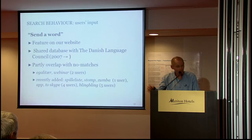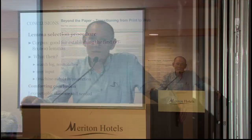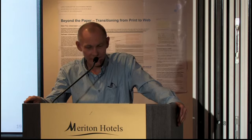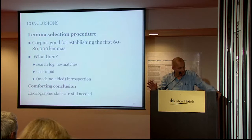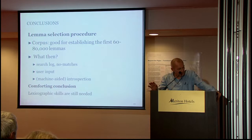To conclude, we've been talking about the way lemmas may be selected for a dictionary. We find that a corpus is good — it is even indispensable — for establishing the first 60,000 to 80,000 lemmas. But once you have them, which is our situation since we're not compiling the dictionary from scratch, it's a good idea to look at our search log and the no-match lists, combine them with the input from our users in a sort of machine-aided introspection, which then leads us to the comforting conclusion that lexicographers and their skills are still needed. Thank you very much.